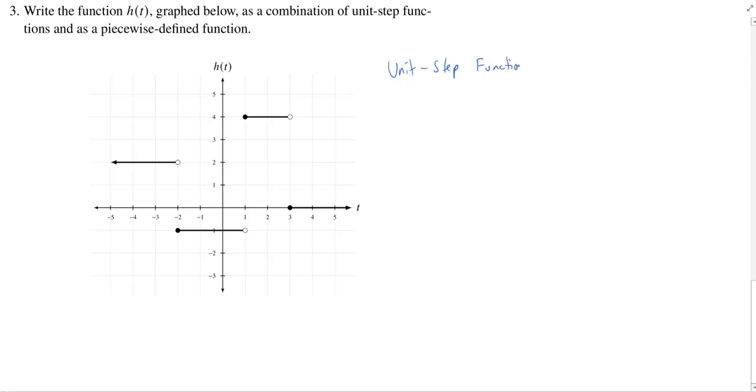For the unit step function we're going to start on the left hand side and notice that this thing is constantly at the value 2. So h of t is going to start just at 2. It's going to stay there until at negative 2 something happens. It's going to go down so we have minus and we're going to put in a u negative 2 of t.